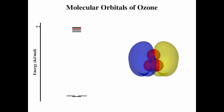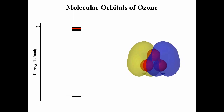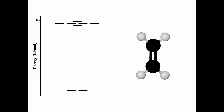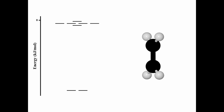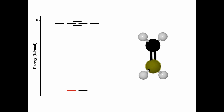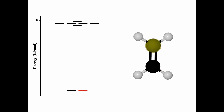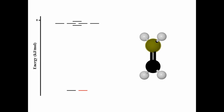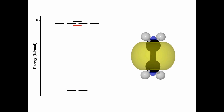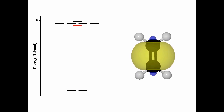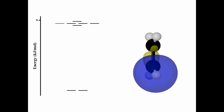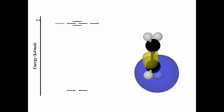Looking at ethene with its carbon-carbon double bond, there are molecular orbitals on each of the carbons that are degenerate — they have the same energy. The energy level diagram on the left is in absolute units. The next orbital is a sigma bond, with electron density on the internuclear axis — that's the sigma bond for the carbon-carbon bond. Then we have sigma bonds for the carbon-hydrogen bonds.